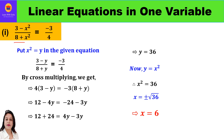The first question is: (3 - x²) / (8 + x²) = -3/4. The variable is raised to power 2, so it's a quadratic equation, not a linear equation. To solve it, we convert it into a linear equation in one variable. We put x² = y (or any other variable). Substituting into the given equation, we get: (3 - y) / (8 + y) = -3/4.